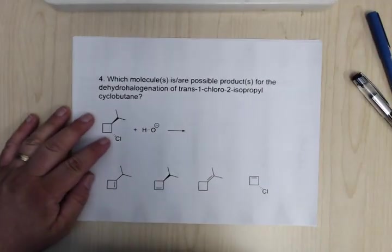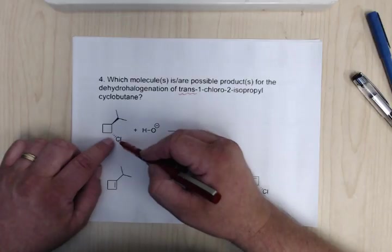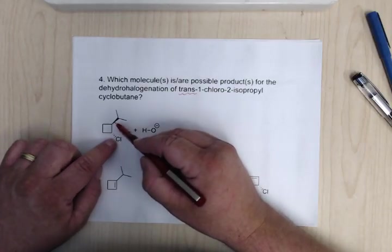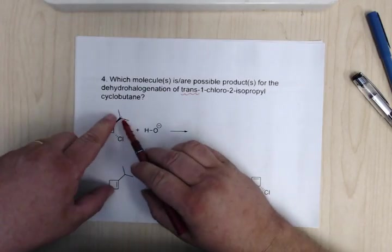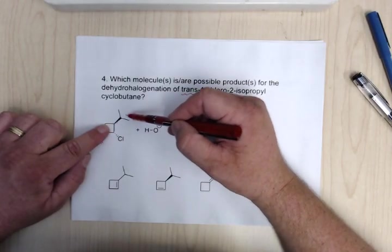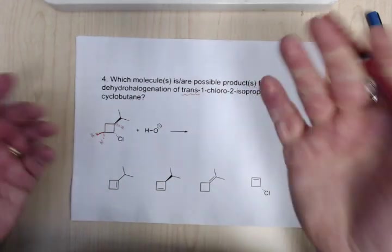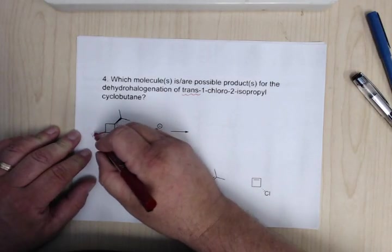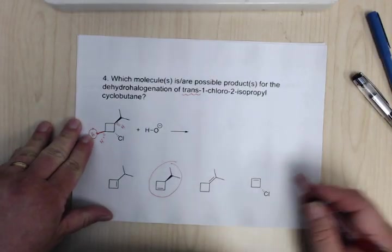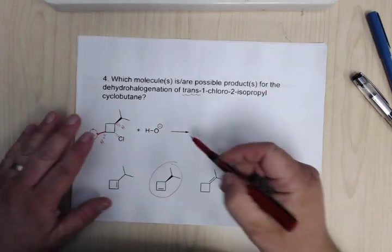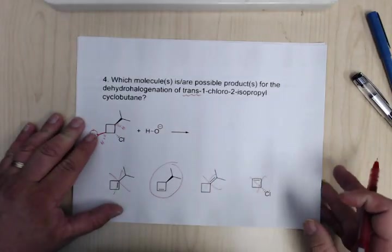Now if instead we did the same reaction but with the trans isomer, the chlorine is now on a dash. We need a hydrogen on a wedge on the adjacent carbon. You're not going to be able to do it on one side because the isopropyl group is in the way. On the other side, there is a hydrogen, but remember it's sticking down — it's not 180 degrees from the chlorine. So you're only going to be able to make the bond using one hydrogen, and in this case this would be the only product. Since it's an E2 reaction, there's no hydrogen available to make the other double bond, so that one can't form.